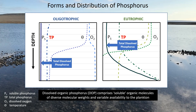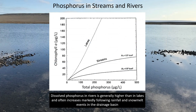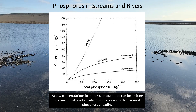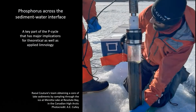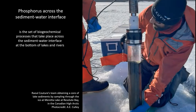Dissolved organic phosphorus, DOP, comprises soluble organic molecules of diverse molecular weights and variable availability to the plankton. Dissolved phosphorus in rivers is generally higher than in lakes, and often increases markedly following rainfall and snowmelt events in the drainage basin. At low concentrations in streams, phosphorus can be limiting, and microbial productivity often increases with increased phosphorus loading. A key part of the phosphorus cycle that has major implications for theoretical as well as applied limnology is the set of biogeochemical processes that take place across the sediment-water interface at the bottom of lakes and rivers.